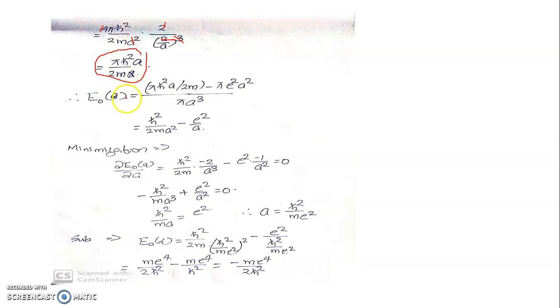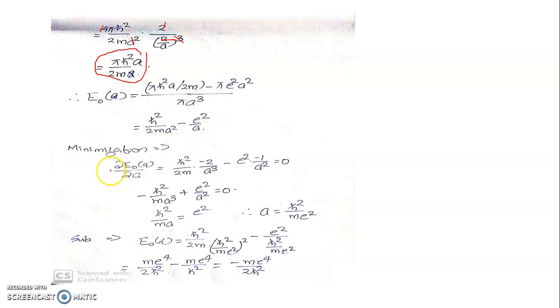Combining the kinetic energy term π h-bar² a / 2m and the potential energy term minus π e² a², then dividing by the normalization π a³, the π a terms cancel appropriately, giving: E₀(a) = h-bar²/(2m a²) minus e²/a. Now applying the minimization condition ∂E₀/∂a = 0 gives: (h-bar²/2m)(−2/a³) minus e²(−1/a²) = 0, which simplifies to minus h-bar²/(m a³) plus e²/a² = 0.